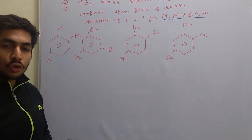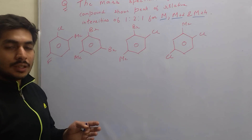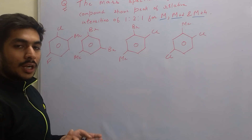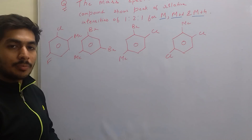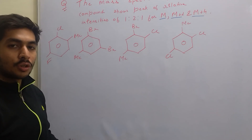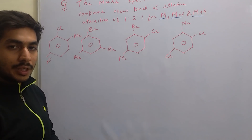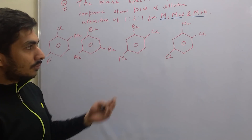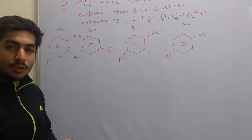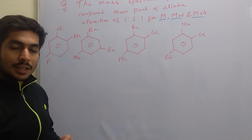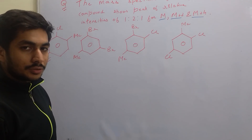The molecular ion peak is the highest peak obtained in a mass spectrum — it represents the molecular mass of the compound. You can obtain a peak higher than the molecular ion peak only if there is a particular atom which has isotopes of higher atomic mass.